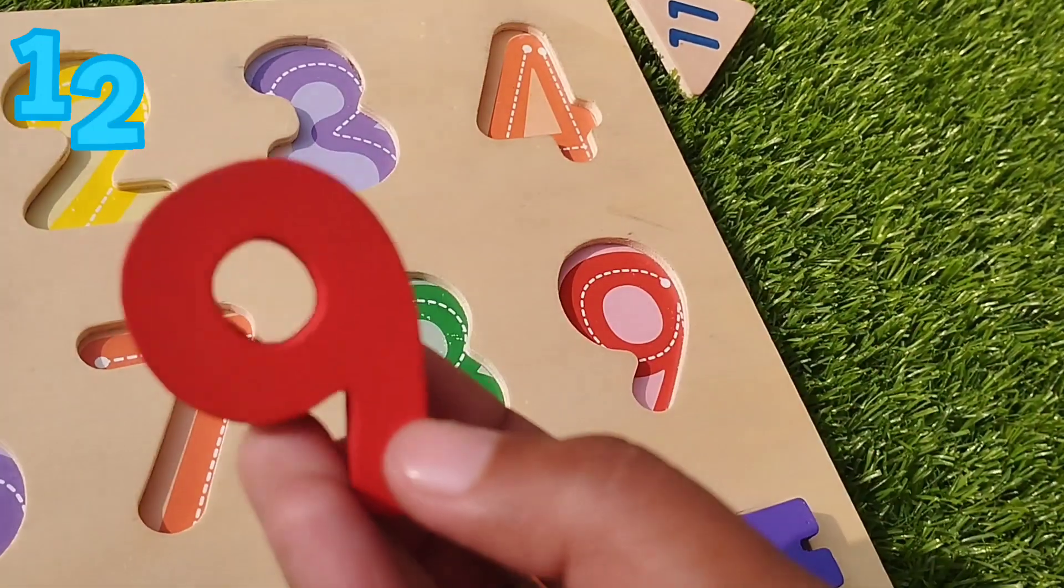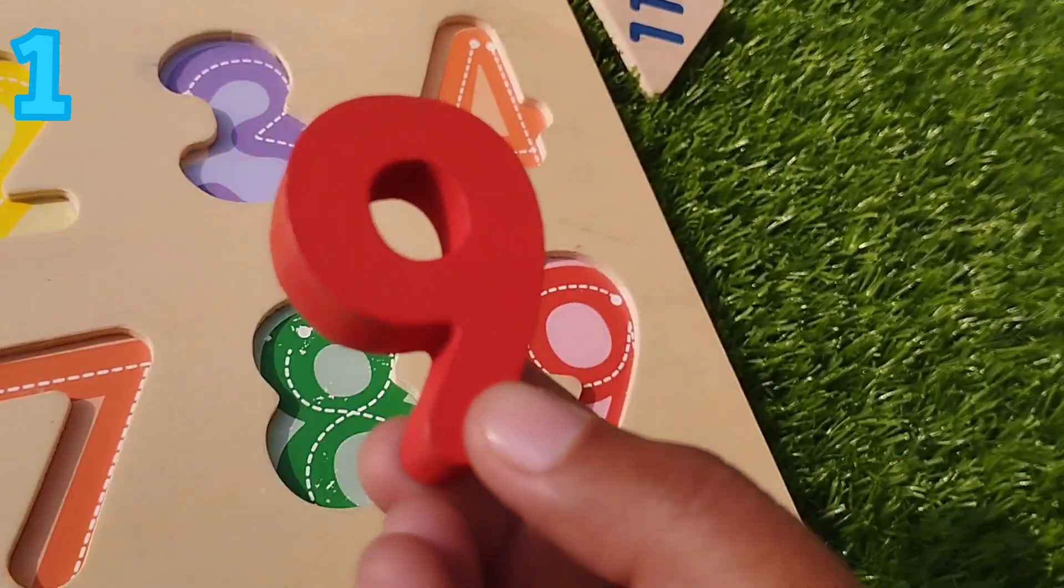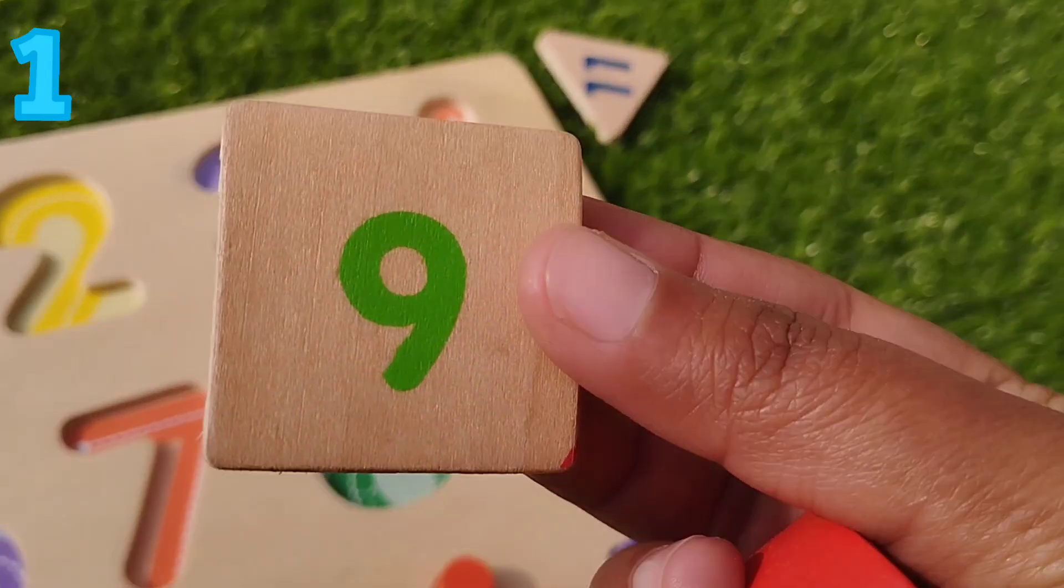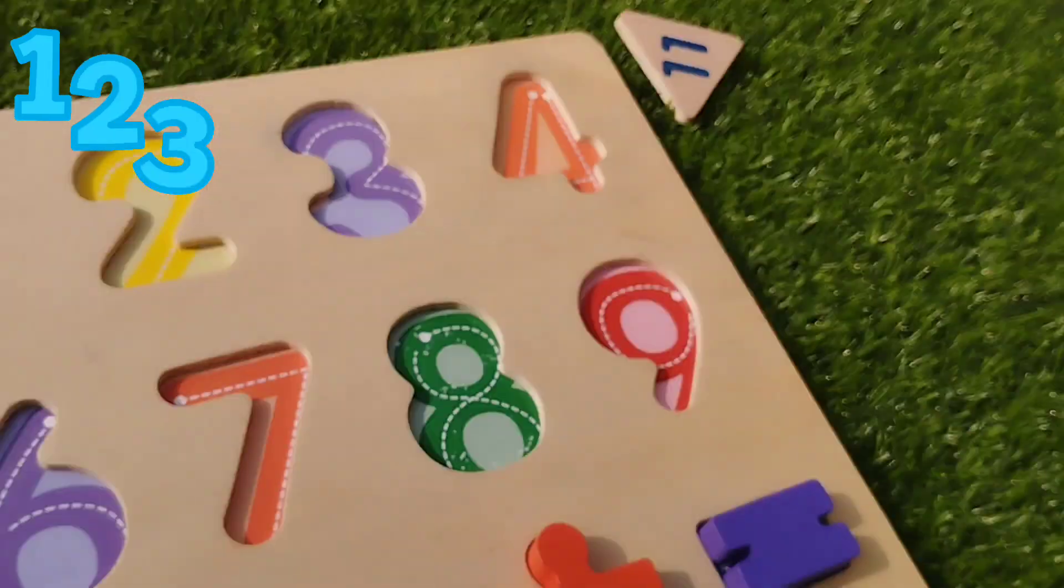9. The next number is number 9. 9 is square. This is square.